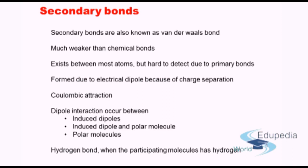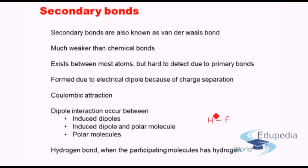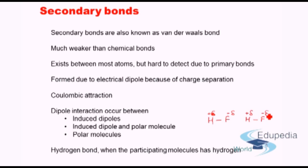Hydrogen bonding is a special case of secondary bonds that occurs when one of the participating molecules contains hydrogen. Hydrogen is specifically highly electropositive. In hydrogen fluoride, for example, hydrogen develops a slight positive charge and fluorine a slight negative charge. The adjacent hydrogen fluoride molecule will also develop positive and negative charges, inherently because of the high electropositivity of hydrogen, thereby creating a bond known as a hydrogen bond.